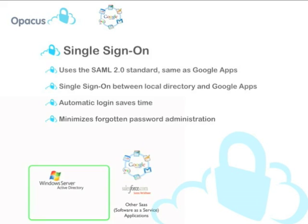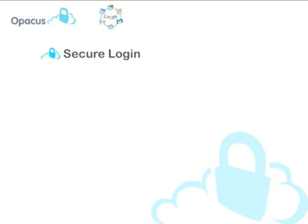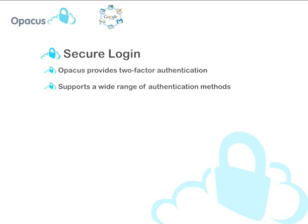Lastly, let's check out the secure login solution for your Google Apps. Opicus secures your login to Google by adding two-factor authentication. It supports a wide range of authentication methods, such as one-time passwords sent by SMS, email, chat, third-party hardware tokens, or by using certificates, or Pledge, our mobile software client which turns your mobile phone into a security token.